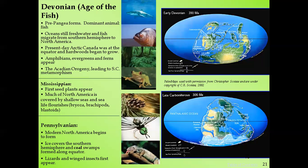During the Mississippian, the first seed plants appeared. Although plants existed before, they did not produce seeds until this period. Much of North America was covered by shallow seas and sea life flourished — bryozoa, brachiopods, and blastoids.